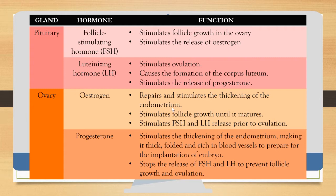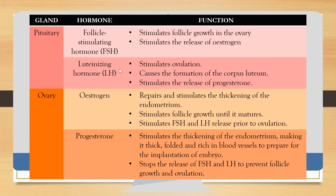The fourth hormone is progesterone, also secreted by the ovary. Its function is to stimulate the thickening of the endometrium — making it thick, folded, and rich in blood vessels to prepare for embryo implantation. Progesterone also stops the release of FSH and LH to prevent further follicle growth and ovulation. The four hormones in the menstrual cycle are FSH, LH, estrogen, and progesterone.